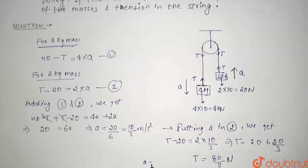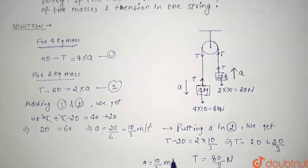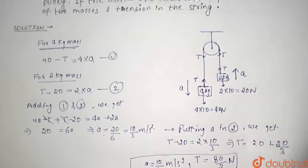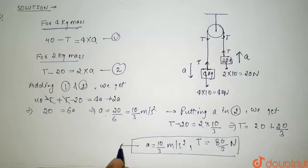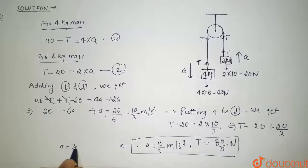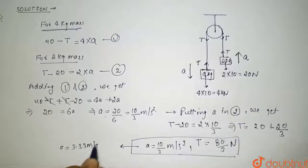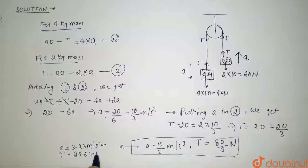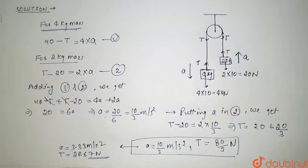So our acceleration is 10 by 3 meter per second square and our tension is 80 by 3 newton. From here we can say that acceleration is 3.33 meter per second square and our tension value is 26.67 newton. So this is our final answer. Thank you guys.